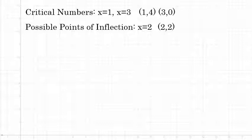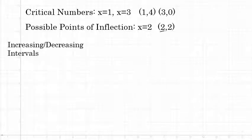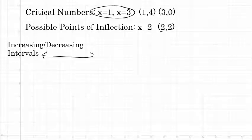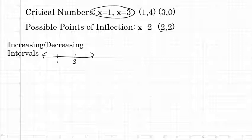Now that we know the critical numbers are 1 and 3 with associated ordered pairs (1, 4) and (3, 0), and the possible point of inflection is x = 2 with associated ordered pair (2, 2), the next step is to determine the intervals on which the function is increasing and decreasing. These intervals are determined by the critical numbers. Placing 1 and 3 on a number line breaks it into three intervals: (-∞, 1), (1, 3), and (3, ∞).